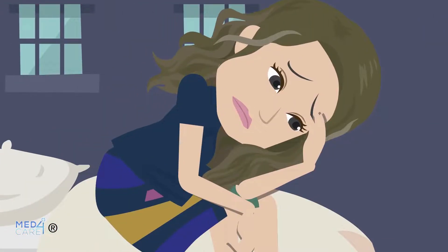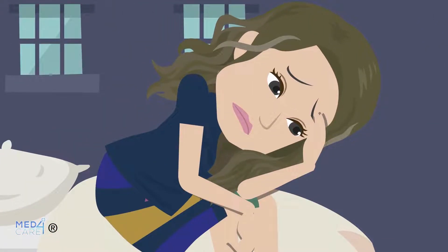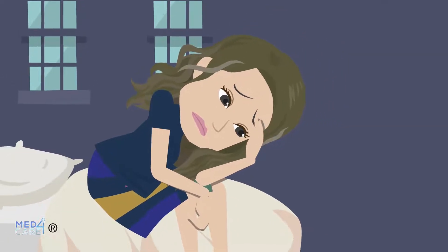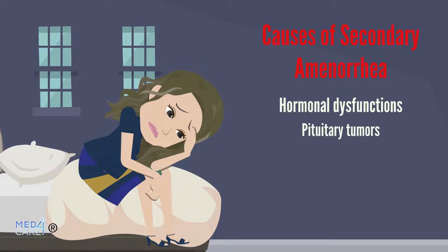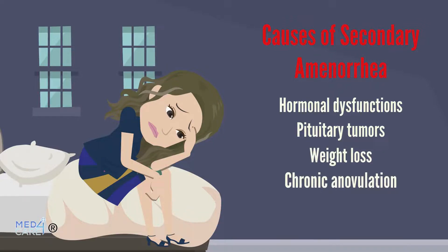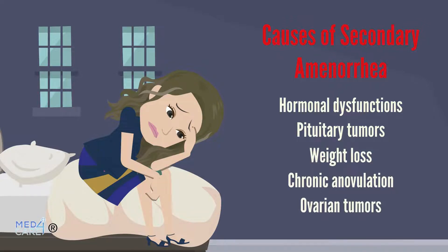If these physiological causes are excluded, secondary amenorrhea may be caused by some of the elements attributable to primary amenorrhea. Hormonal dysfunctions or pituitary tumors can contribute to the onset of amenorrhea, even in a woman who has had a regular menstrual cycle. Weight loss, chronic anovulation, and ovarian tumors are then counted among the other triggering causes.